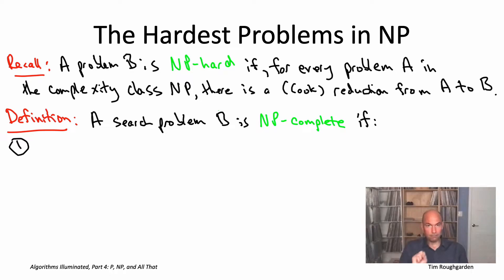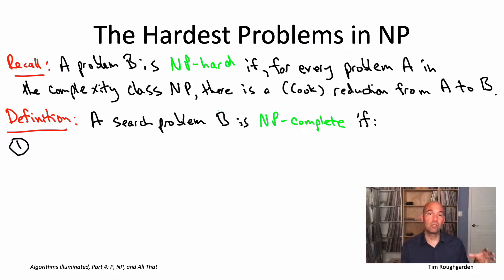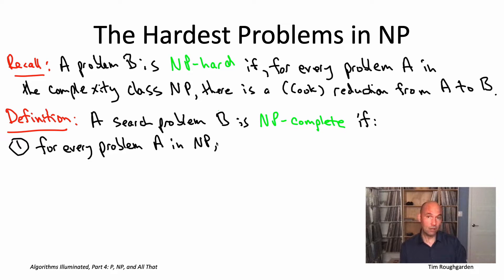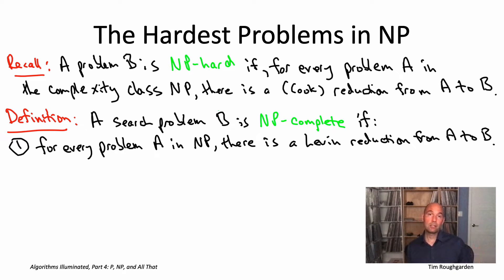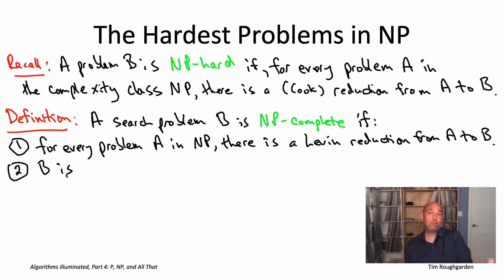NP-complete only refers to search problems. Next, it should be the case that not only is B algorithmically sufficient to solve all the problems in NP, but all the problems in NP are literally just thinly disguised versions of B. For NP-hardness we just wanted a Cook reduction from every NP problem to B; for NP-completeness, we're going to insist on a Levin reduction from every NP problem to B. This first condition requires that B simultaneously encodes all NP problems. The second condition — that B is itself a member of NP, a search problem with efficiently recognizable solutions — is what lets us interpret NP-complete problems as the hardest problems among NP.